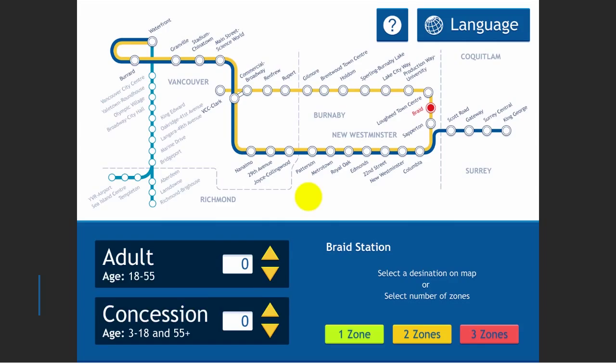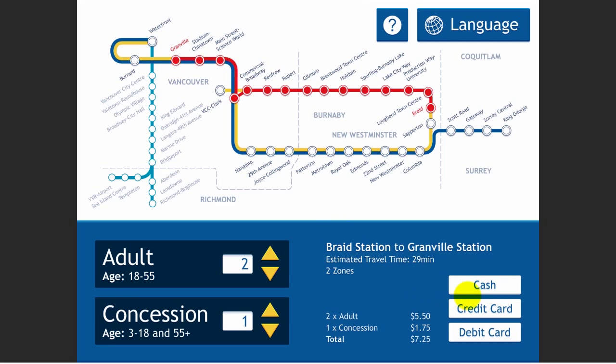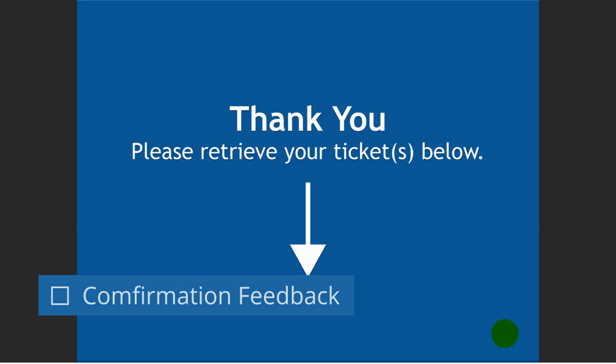Navigation has become much simpler since there are fewer screens. If any changes need to be made, you simply tap on a new station. At the end of your purchase, there will be a confirmation screen to remind you to pick up your ticket and receipt.